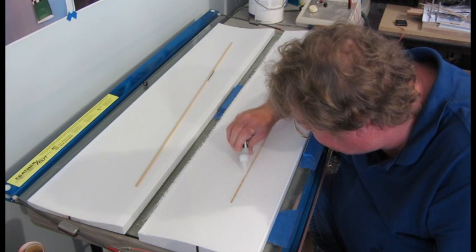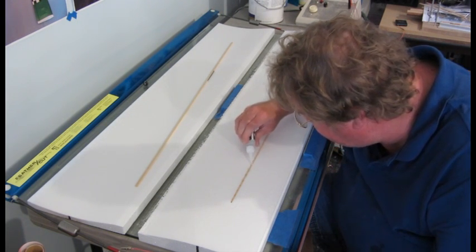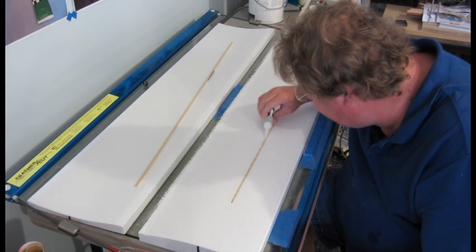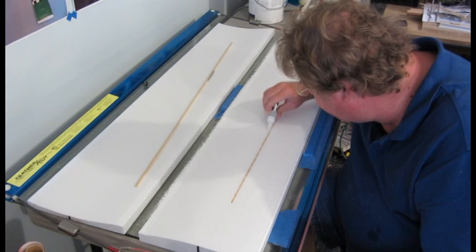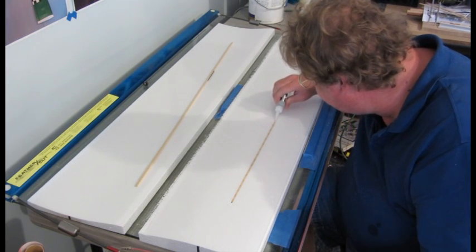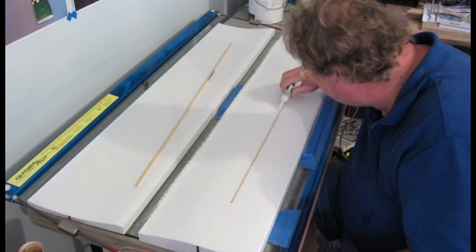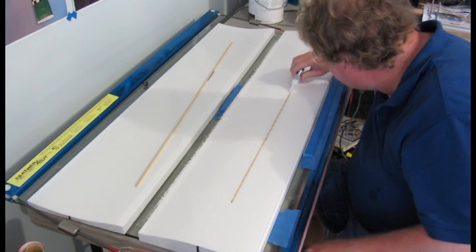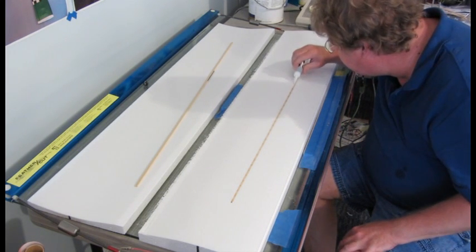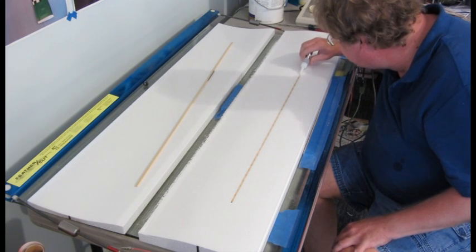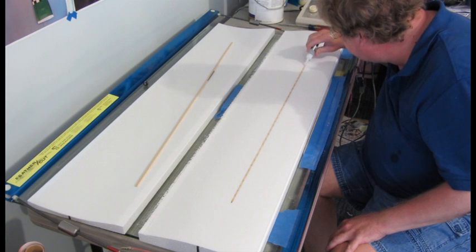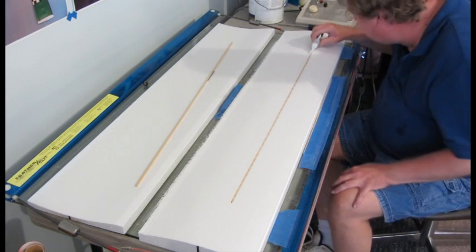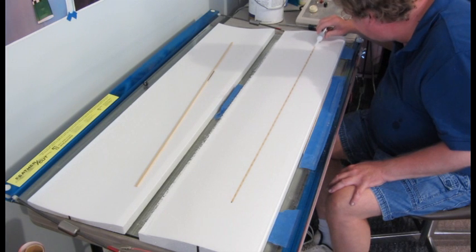Some epoxy will get down between the spar and the foam to increase the strength of the wood to foam joint. But the CA holds it in place so that when I put the skin on and it goes under vacuum, the spar is held tightly against the carbon fiber in the wing skin. Because like I said, that's where the real strength of this structure is - in the carbon fiber to spruce spar joint and the carbon fiber to wing skin. And it's real important that there be good epoxy to carbon fiber on both sides of that carbon fiber spar.